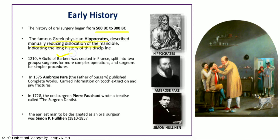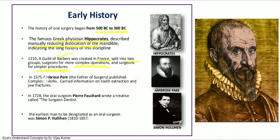A guild of barbers was created in France that was split into two groups — some barbers performed complex operations and some performed simpler surgical procedures. After that, in 1575, Ambrose Paré, one of the fathers of surgery, told about tooth extraction, how to manage jaw fractures, and all the complete works about surgeries.